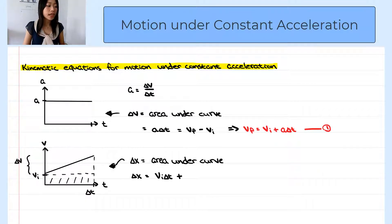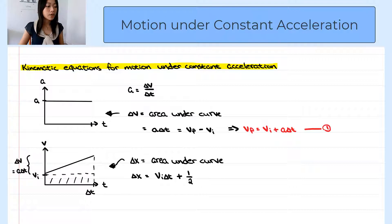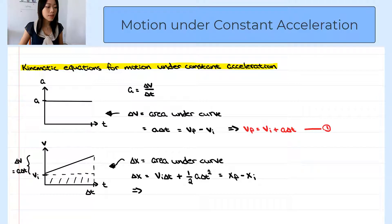And from above, we found that the change in velocity equals acceleration times delta t. The base of the triangle is still delta t, and the area of the triangle is half times base times height, so this area would be half times acceleration times delta t squared. Note that delta x also equals the final position minus the initial position. That is our second kinematic equation: delta x equals initial velocity times delta t plus half times acceleration times delta t squared.